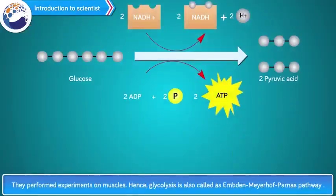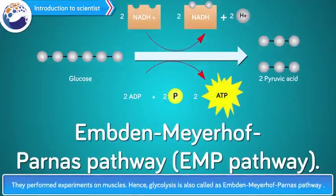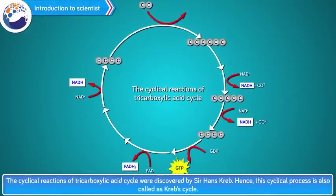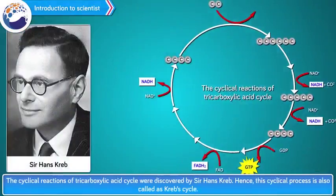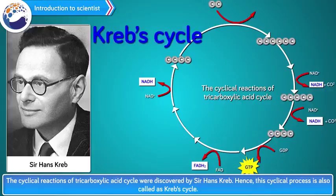They performed experiments on muscles for this purpose. Hence, glycolysis is also called the Emden-Meyerhoff-Parnas pathway or EMP pathway. The cyclical reactions of the tricarboxylic acid cycle were discovered by Sir Hans Krebs. Hence, this cyclical process is also called the Krebs cycle.